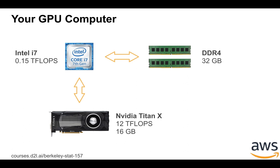Let's start with the GPU machine you can get on your own. You can buy a reasonable Intel CPU — the i7 — which gives you 0.15 TFLOPs. You can put a reasonable 32 GB DDR4 memory in your machine. And most importantly, you're going to buy an NVIDIA GPU. Here we're using the NVIDIA Titan X, a decent GPU that two years ago gave you 12 TFLOPs and 16 GB memory — almost 10 times more TFLOPs, the computational power, compared to the CPU.